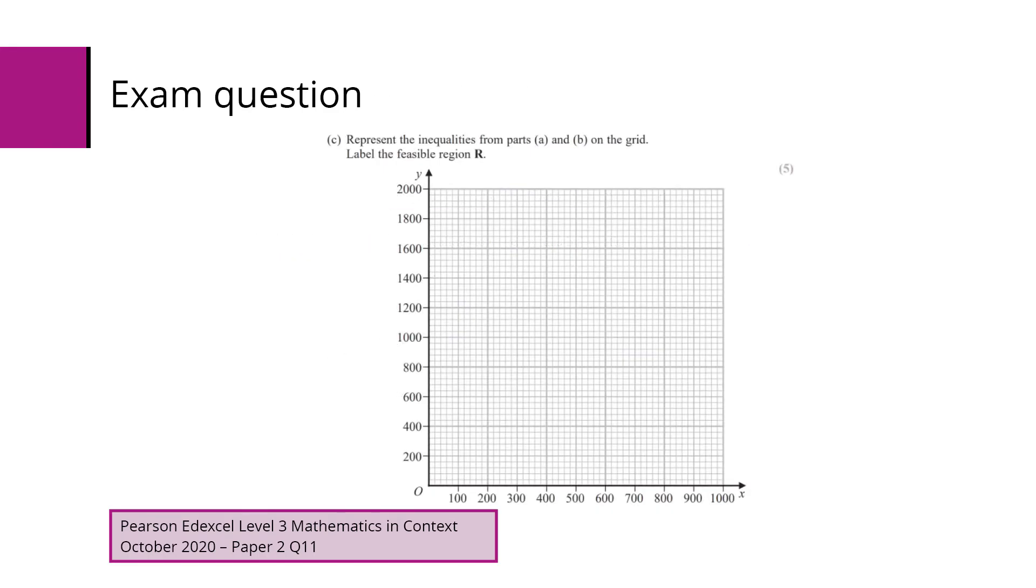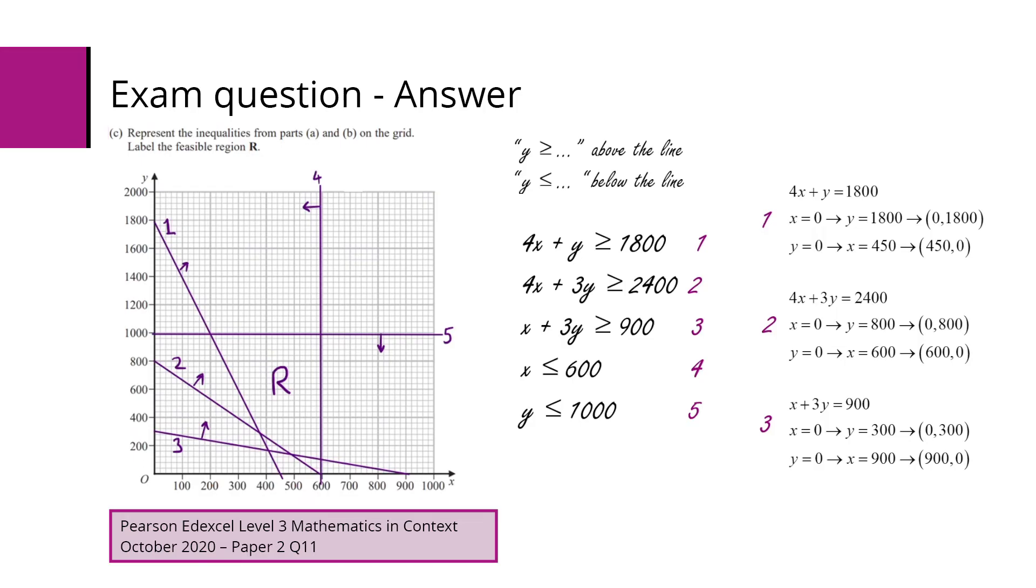Part C wants us to represent these inequalities on the grid provided. We must also then label the feasible region with an R.